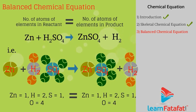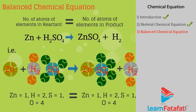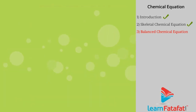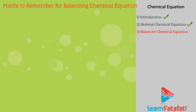In this example, elements on both sides are equal: zinc is one, hydrogen is two, sulfur is one, and oxygen is four on each side. Points to remember before balancing a chemical equation: